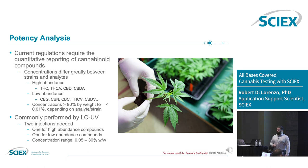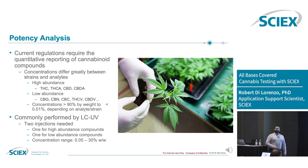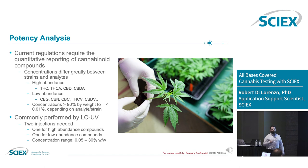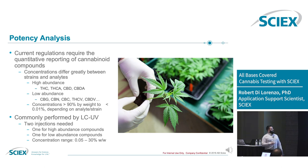Most labs will also analyze for the lower-abundant cannabinoids: CBG, CBN, CBC, and all those acronyms. One of the challenges is that concentrations can vary enormously — from greater than 90% by weight for cannabis oil concentrates down to minor cannabinoids that can be orders of magnitude lower. Trying to analyze all of these in one injection with traditional analysis is very difficult. This is not a challenge from a detection standpoint because concentrations are very high, so it's commonly performed by LC-UV.